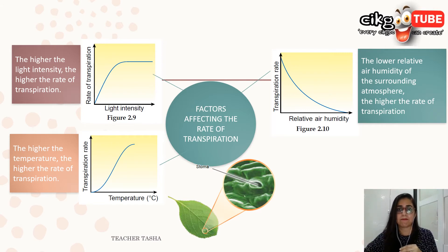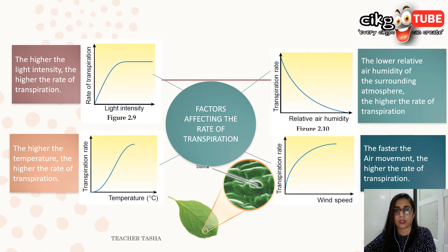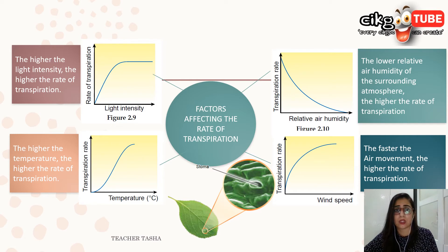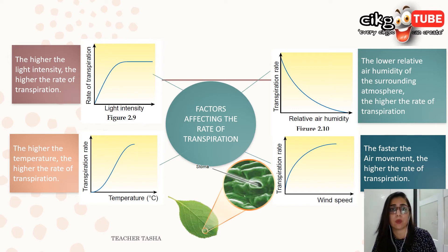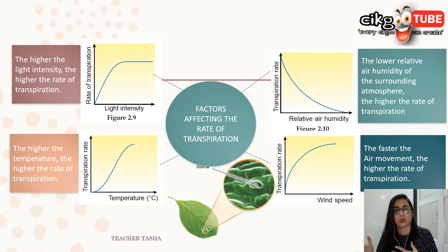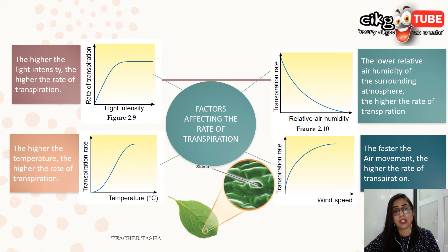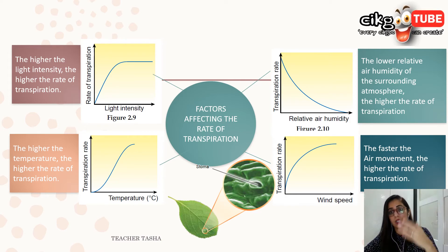The last factor is air movement. On a windy day, air movement is high. Faster air movement removes the water vapor that accumulates around the leaf surface after diffusing through the stomata. This increases the concentration gradient between the water vapor inside the leaf and outside, which increases the transpiration rate. When the air is still, transpiration rate decreases or stops altogether.